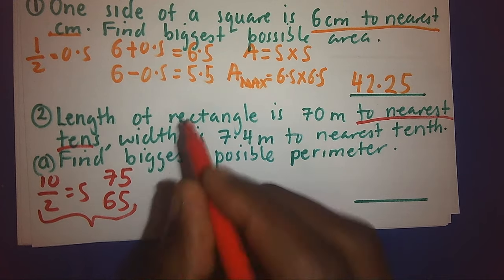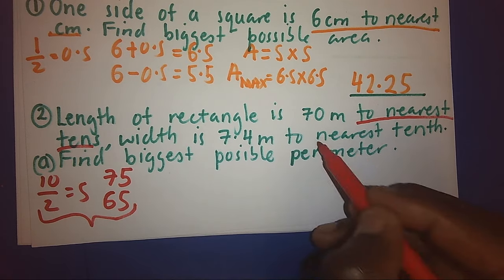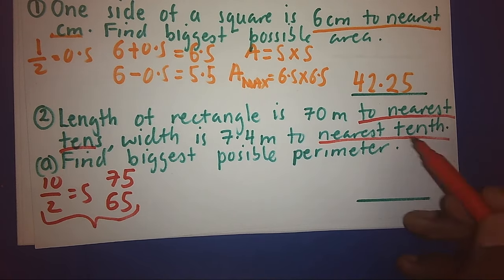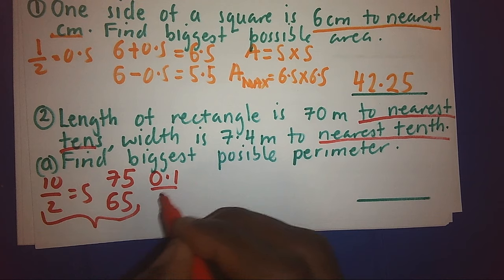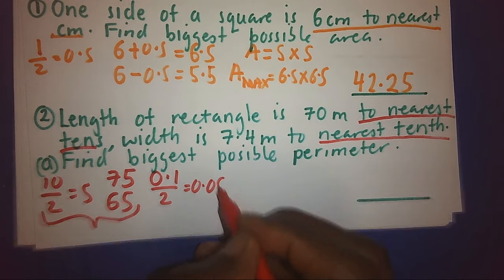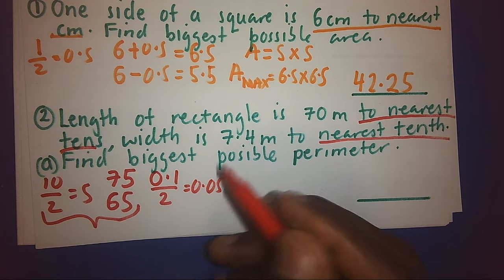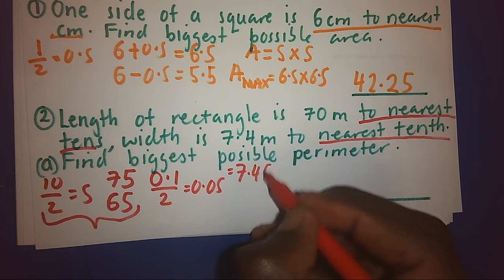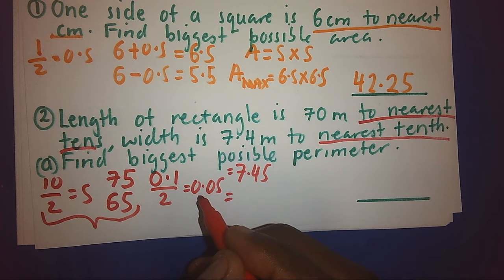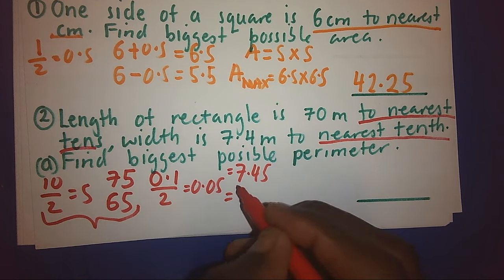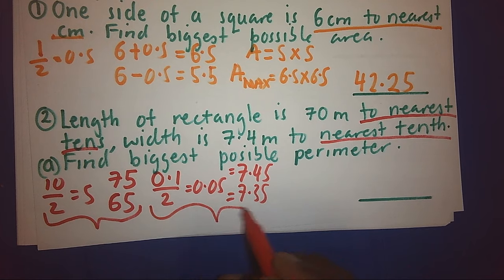Now, for the width, it tells us: width is 7.4 meters to the nearest tenth. The tenth means 0.1. When I divide by 2, I get 0.05. So I will take 7.4 and add 0.05, giving 7.45 as my upper bound. And 7.4 minus 0.05 gives 7.35 as my lower bound for width.